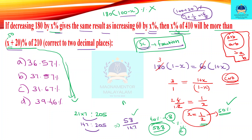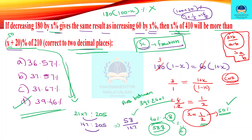From the answer range, we need to write the answer between 39 and 40. We find option one. Two decimal places and one decimal place give the same result — the calculation confirms the answer.